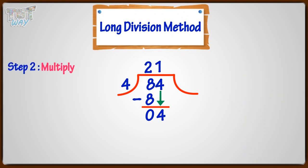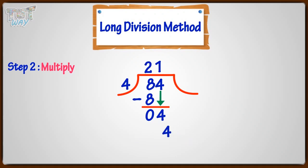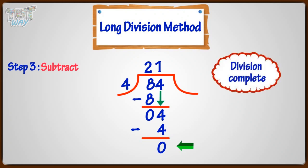Next step is multiply. Multiply the divisor with 1. 4 multiplied by 1 gives us 4. Write the multiple below. Third step is subtract. Subtract and write the difference below. Now, we have no more digit left in the dividend to bring down. Hence, the division is complete and no remainder is left.